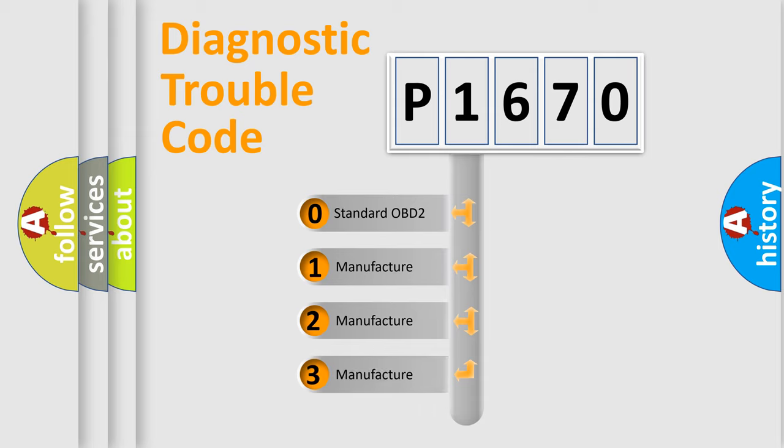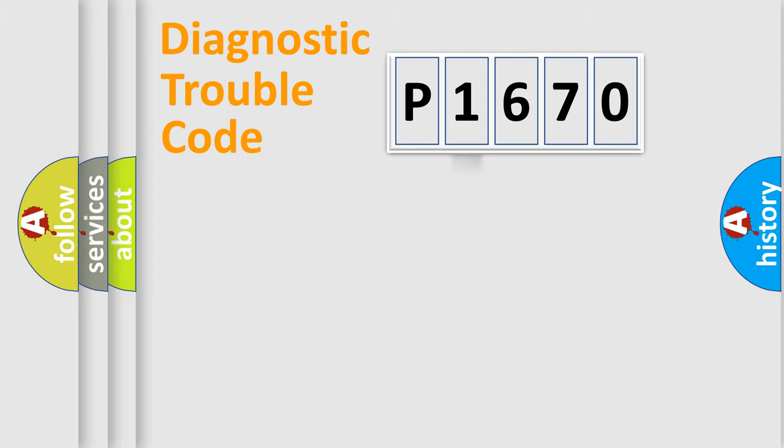If the second character is expressed as zero, it is a standardized error. In the case of numbers 1, 2, or 3, it is a more prestigious expression of the car-specific error.